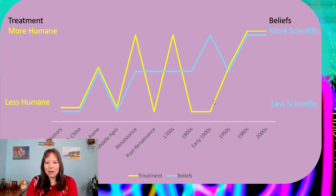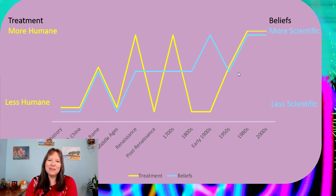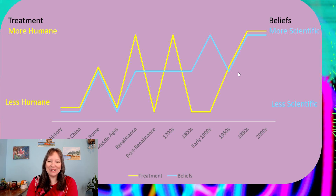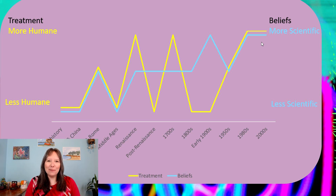Luckily, we have started to move towards an area that's both scientific and humane. The reason the blue line dips around the 1950s is that we moved away from the medical model into things like psychoanalysis, which was not so empirically supported. Hopefully today we're on the right path for understanding abnormal psychology.